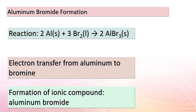Let's continue our exploration of the aluminum-bromine reaction. The chemical equation representing this process is: 2Al(s) + 3Br₂(l) → 2AlBr₃(s). This equation captures the electron transfer happening from aluminum to bromine. As a result, we witness the formation of an ionic compound — aluminum bromide — which showcases the strong electrostatic forces binding oppositely charged ions together.